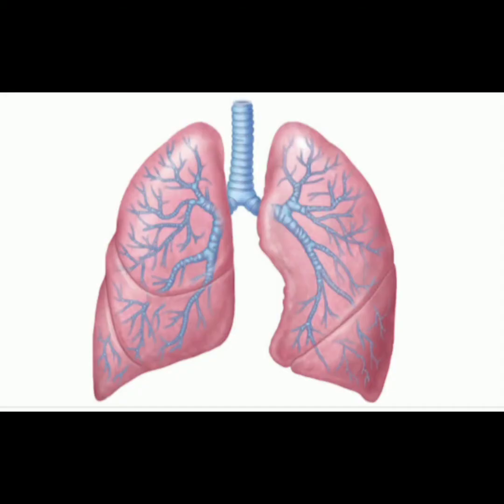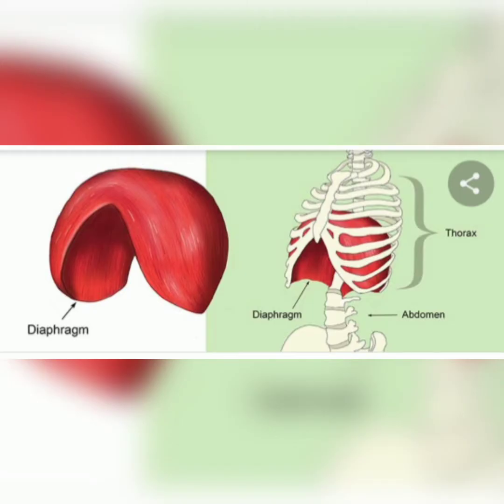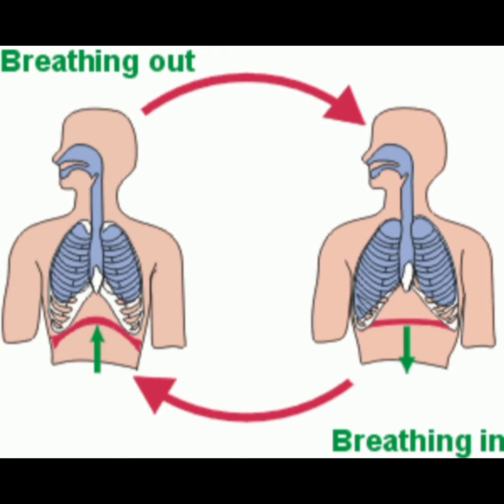Look at this picture — this is the structure of lungs, and we breathe with our lungs. Our lungs don't contain any muscles. Two types of muscles help in the process of breathing: one is intercostal muscles and the other is the diaphragm. Intercostal muscles are the muscles in between our ribs. You can feel these — touch your ribs and in between you will feel these muscles. The diaphragm is present under the ribs.